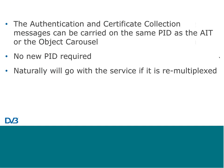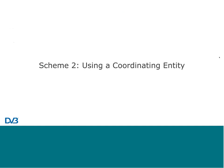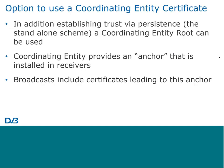The optional mode using a coordinating entity works where a certificate is distributed by some other mechanism — for example installed in the receiver during manufacturing or via a software update. This provides an anchor — a trusted public key — and the broadcast then uses certificate chains that lead to this anchor delivered by a private mechanism.